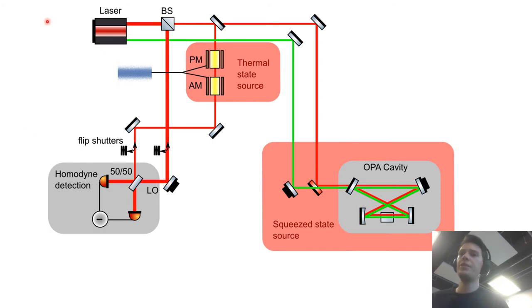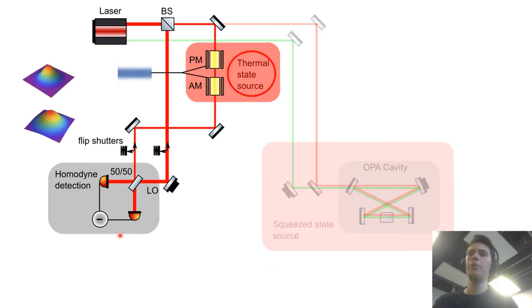So here is a schematic view of our experiment and we tried the protocol with two different states. We tried a thermal state source and the squeezed state source. The thermal state source was generated using phase and amplitude modulators in which we send a white Gaussian electronic noise and by tuning the variance of this noise we are able to tune the variance of the thermal state generated.